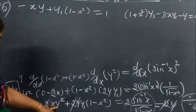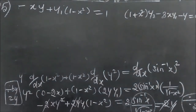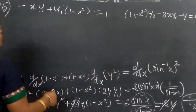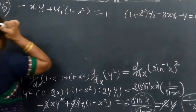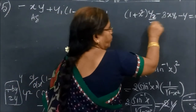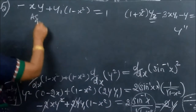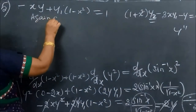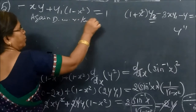So we get minus X·Y·(1 minus X²)·Y1 equal to 1. Now again differentiate. Y2 means the second derivative. Again you are differentiating with respect to X.